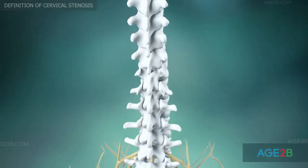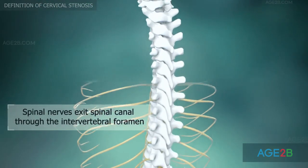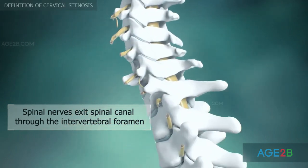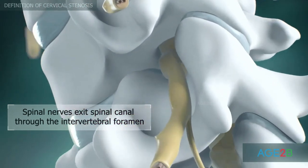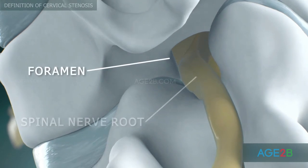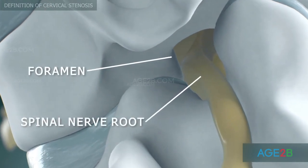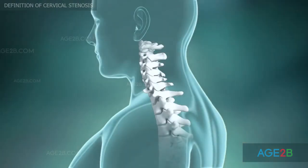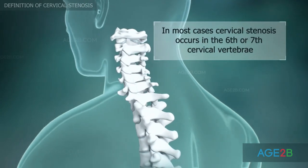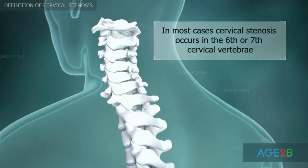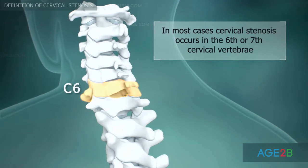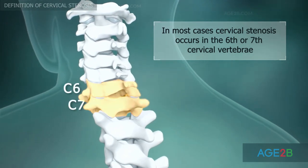The spinal nerves branch off your spinal cord in pairs and travel through small openings between your vertebrae. Cervical stenosis can be located in any cervical vertebrae, but in most cases it occurs in the sixth or seventh cervical vertebrae.